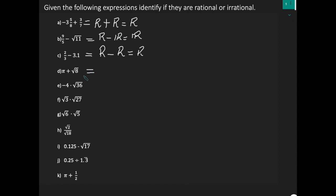Let's look at D. We have pi. Remember, pi is irrational. And you're adding it to the square root of 8. Can you take the square root of 8 in your head? The answer is no. The square root of 8 is irrational. When you add two irrationals, the result is irrational.